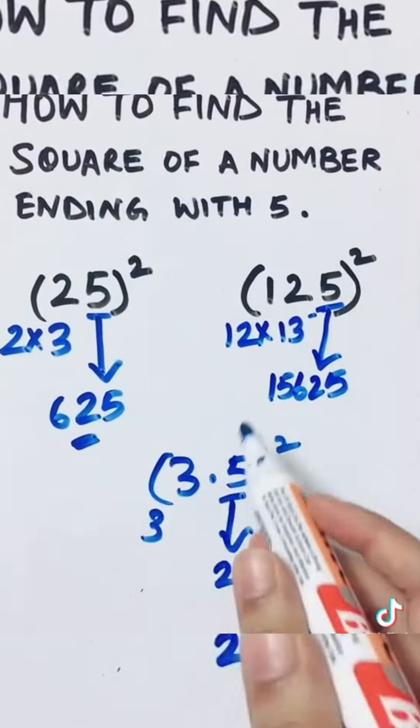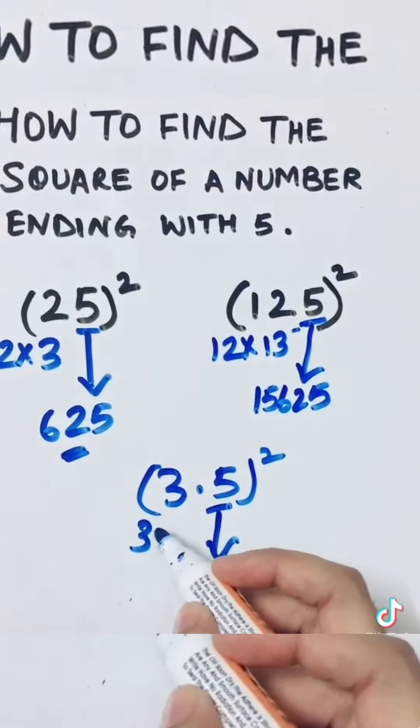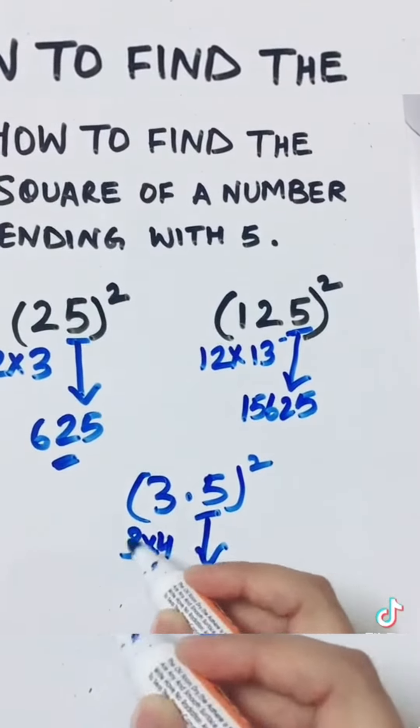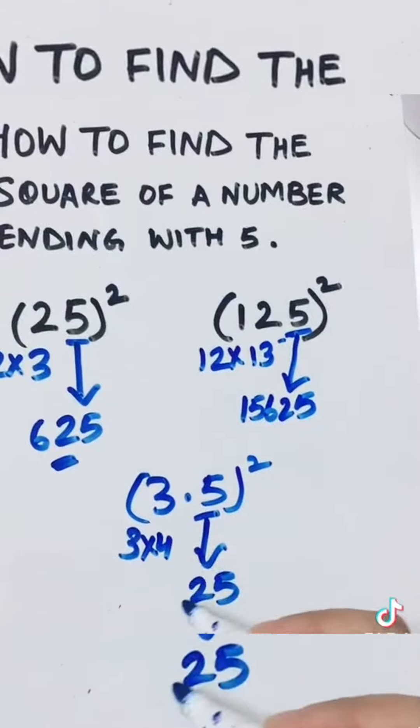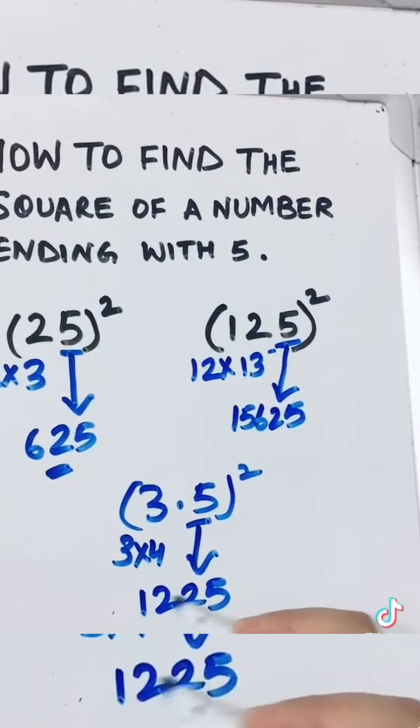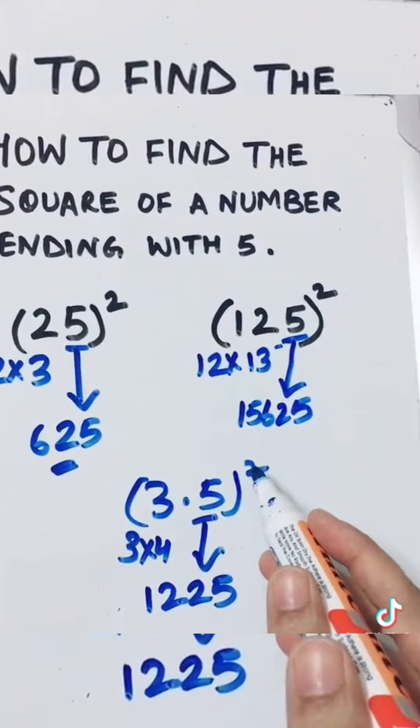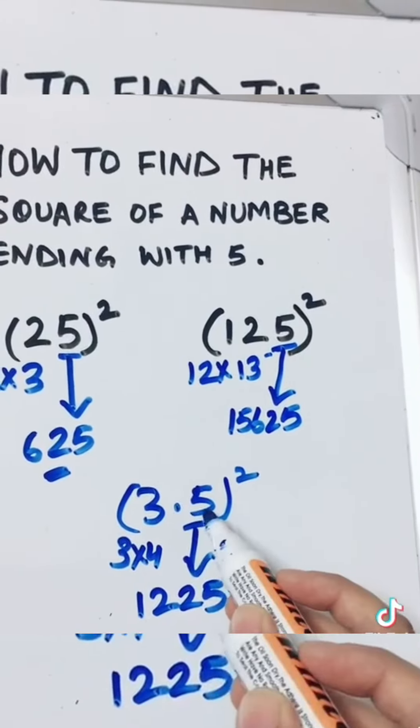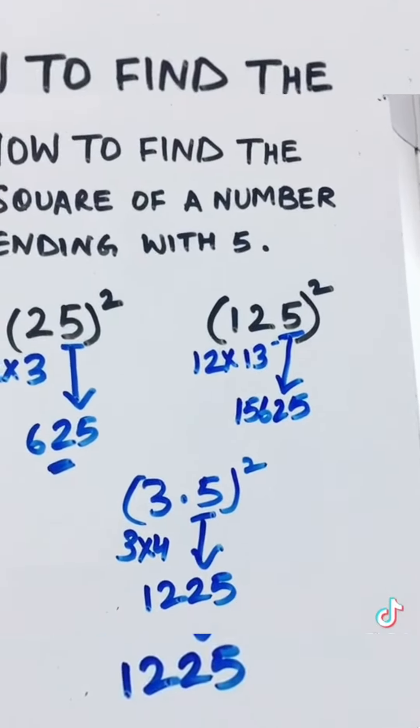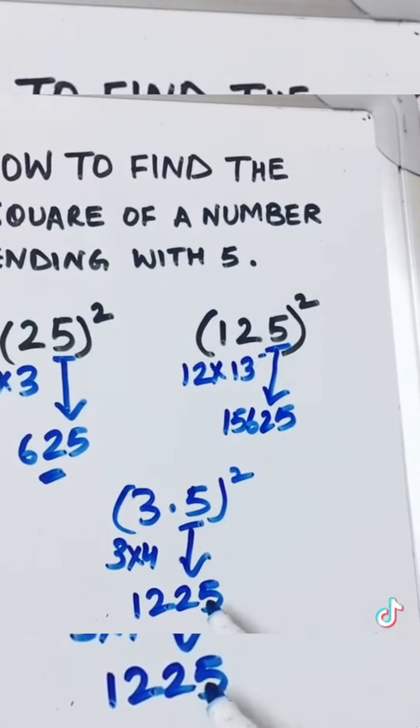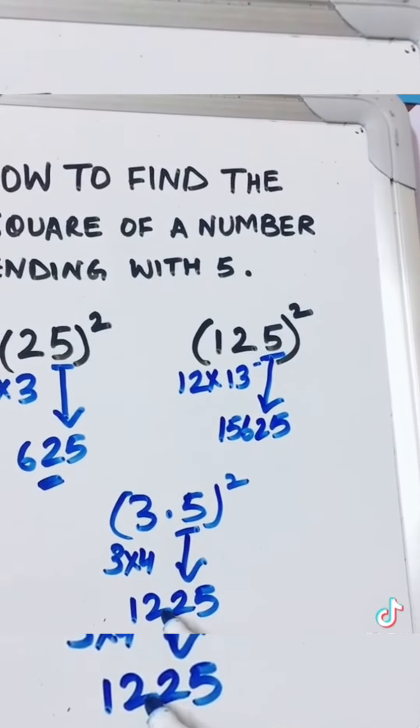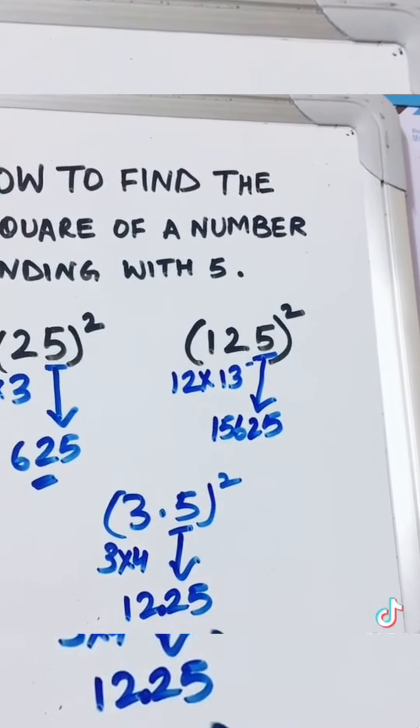We do this. So 3 into the next number after that is 4. 3×4 is 12, so 1225. But we have a decimal here, and it is a square. The decimal is after a single digit and it is a square, so we take two digits: 12.25 is the answer.